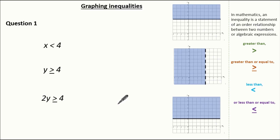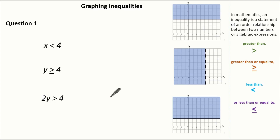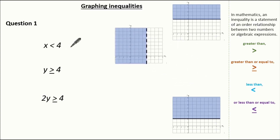Let's look at this question to see if you can match up the inequalities with the correct graph. On the axis, 1 square is 1 unit. For x is less than 4: we know it's going to be a dotted line, and we also know it's going to be a vertical line where the x values shaded are less than 4. So therefore it must be this graph.